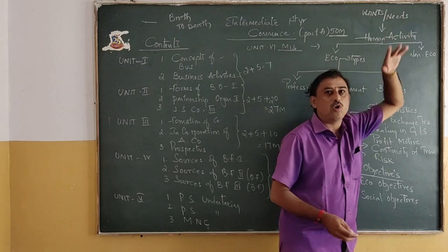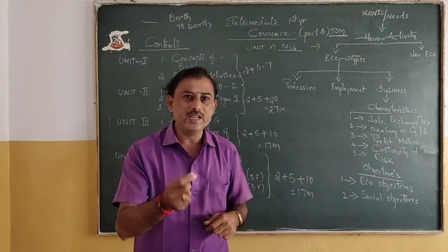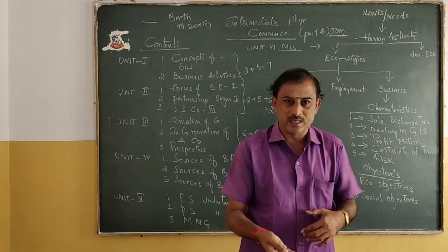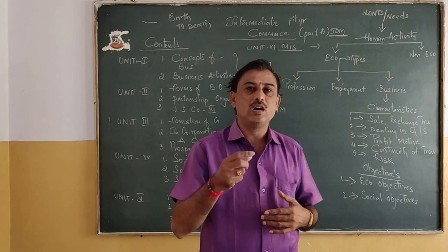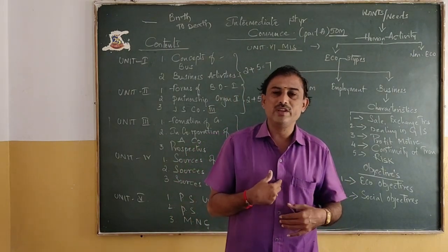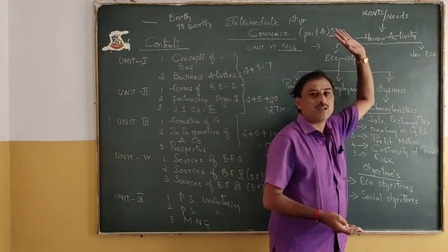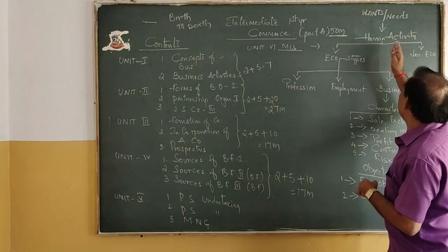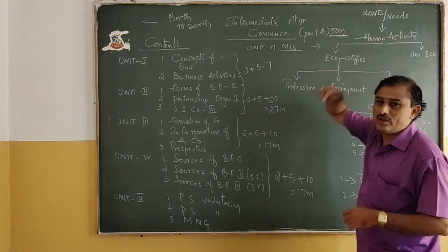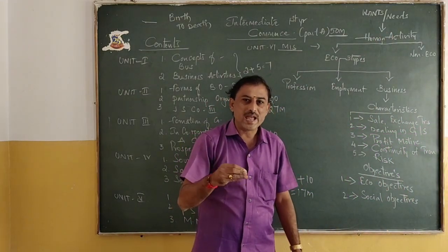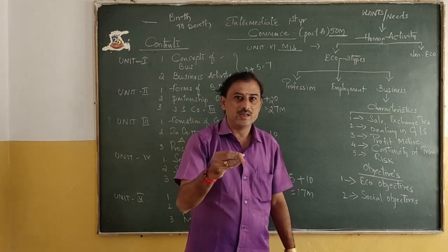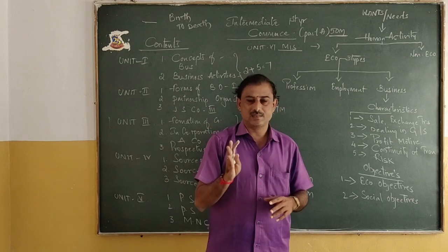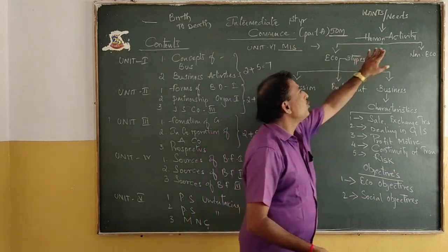Wants and needs — wants are nothing but the desires which arise in your mind, which you need to satisfy yourself. Needs means those essential things which are compulsory to have with us so that we can lead our life. To complete both of these — the meaning is the same, and we use them interchangeably. We will call that as human activity. Human activity means nothing but all those activities undertaken by a person to satisfy his basic needs.